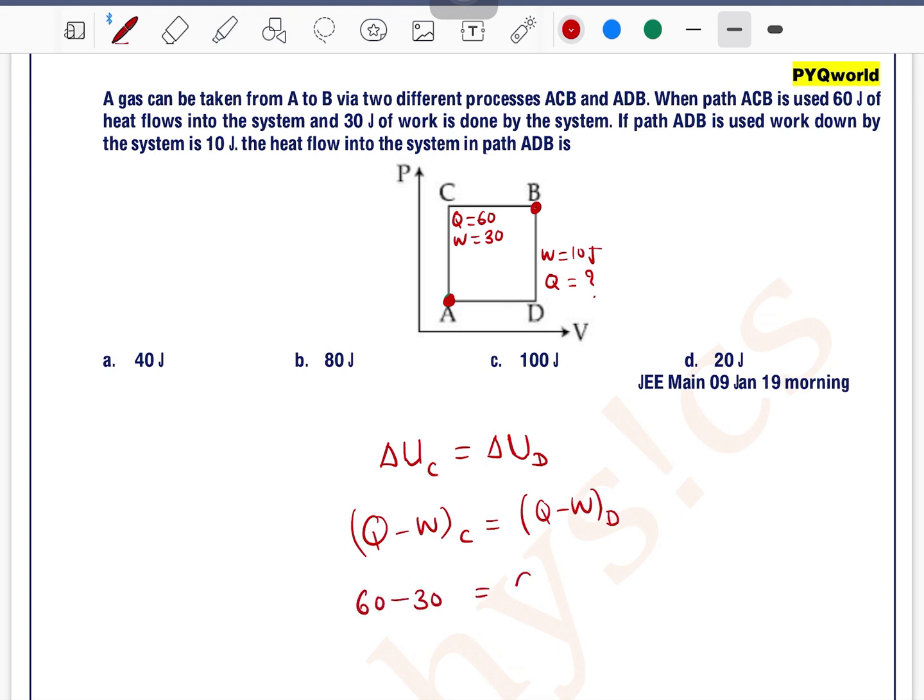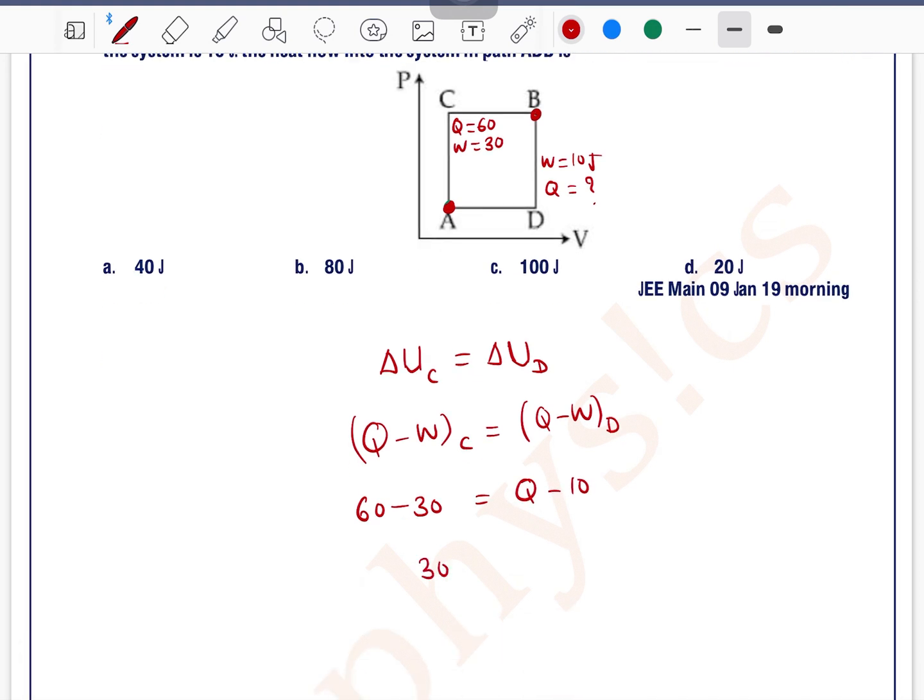So 60 minus 30 equals Q minus 10. 60 minus 30 is 30, which equals Q minus 10. So Q equals 40 joules.